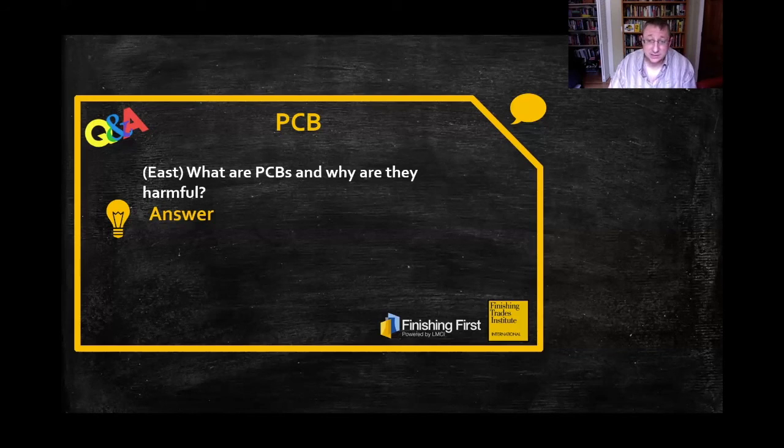Due to their toxicity to humans and the environment, they were banned by the EPA in 1979 under the Toxic Substance Control Act. PCBs are classified as probable human carcinogens and are listed in the top 10% of EPA's most toxic chemicals.